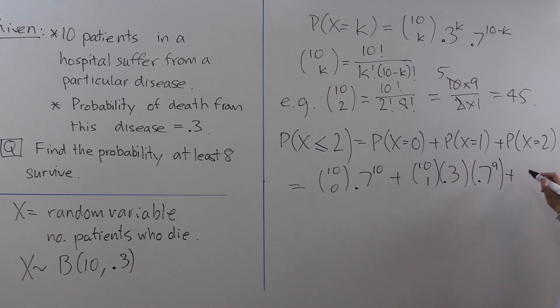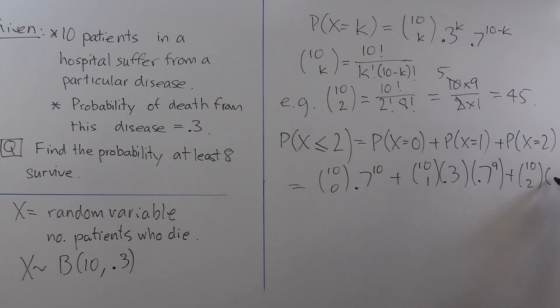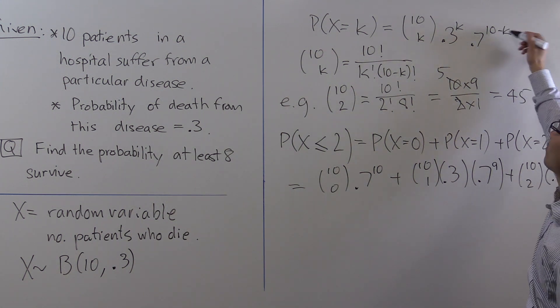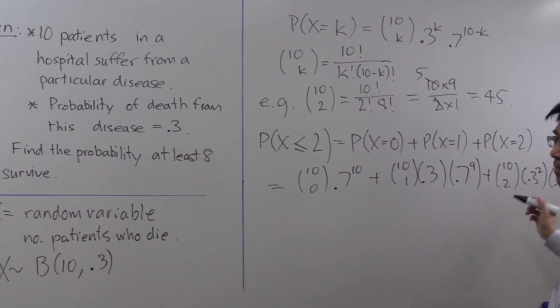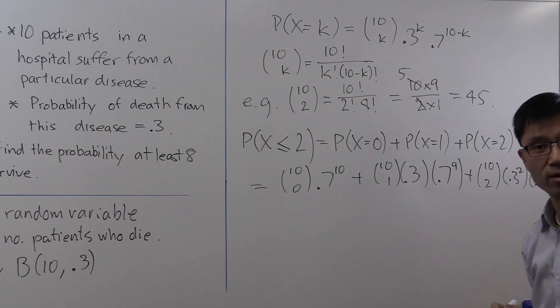And finally the last term is 10 choose 2. k equals 2, so you have 0.3 to the 2 times 0.7 to the 10 minus 2, or 0.7 to the 8. And that's the expression you need to evaluate.